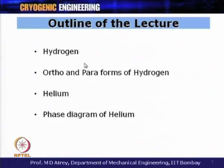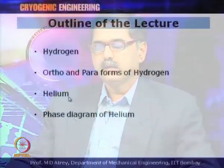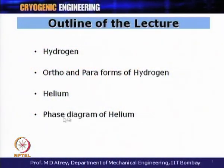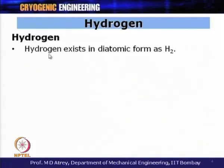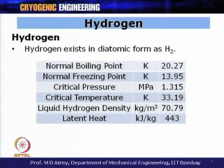Hydrogen and Helium were identified as special cryogens in the last lecture and will be dealt with specially in this dedicated lecture. We will continue talking about Helium in the next lecture as well. Hydrogen has a boiling point of 20 Kelvin and exists in diatomic form H₂.